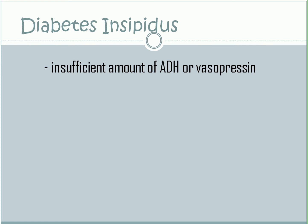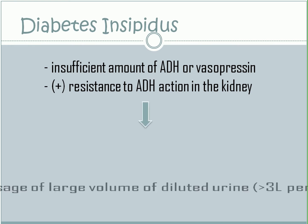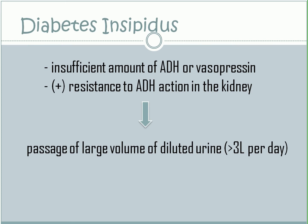Or, there is a resistance to antidiuretic hormone action in the kidney. This will result in the passage of large volumes of diluted urine, which is more than 3 liters per day.